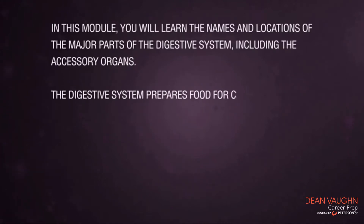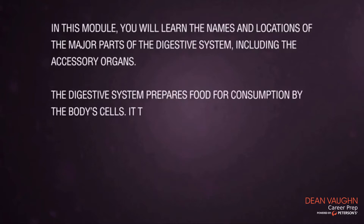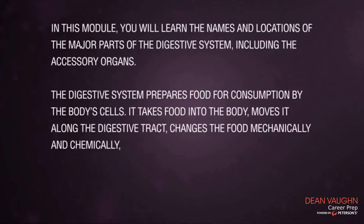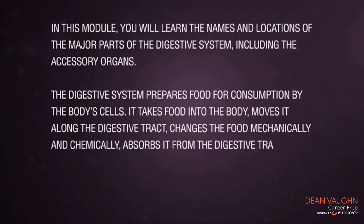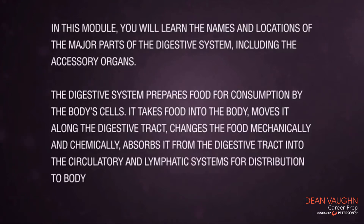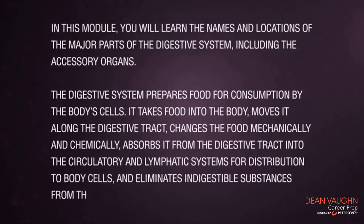The digestive system prepares food for consumption by the body cells. It takes food into the body, moves it along the digestive tract, changes the food mechanically and chemically, absorbs it from the digestive tract into the circulatory and lymphatic systems for distribution to body cells, and eliminates indigestible substances from the body.